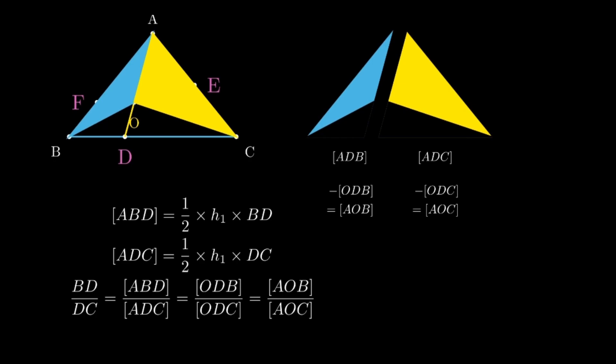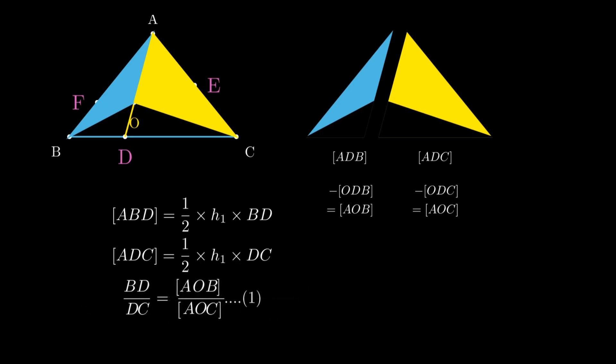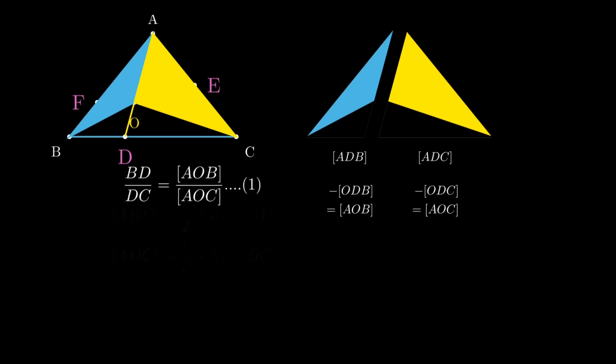So these little triangles, the blue and the yellow triangles, their ratio is BD over DC. So we use this concept of area and the ratio of area is equal to ratio of bases. One more time. And we will get CE over EA equal to COB over AOB. And AF over FB equal to AOC over COB.